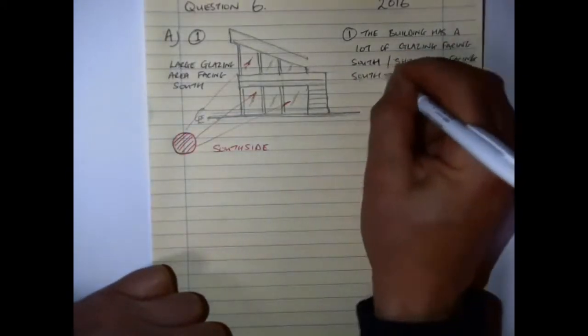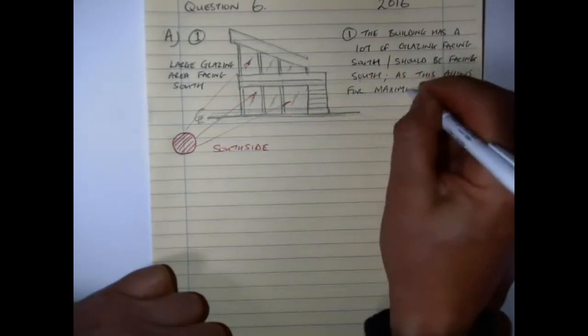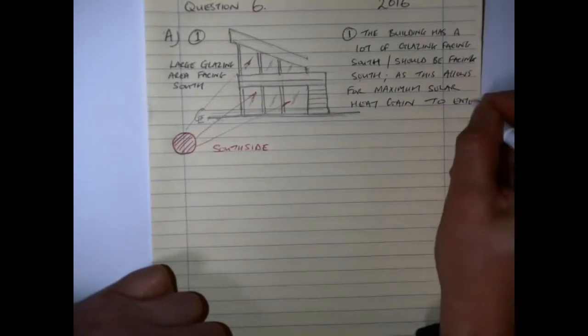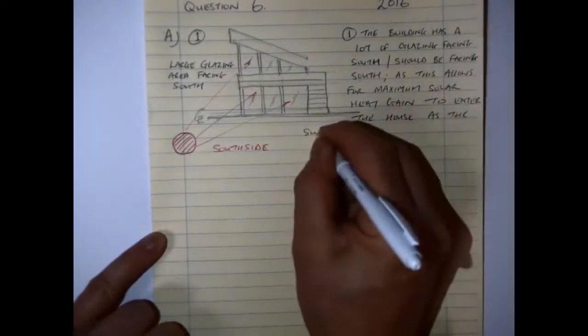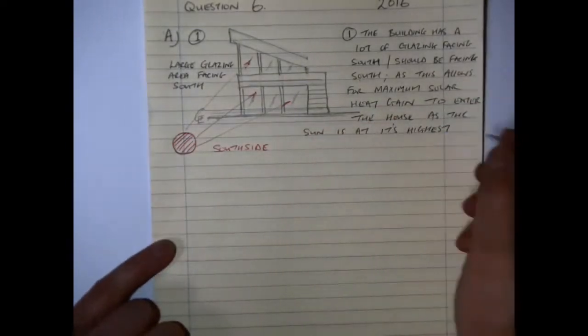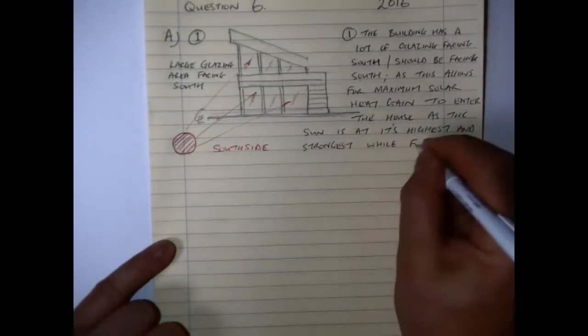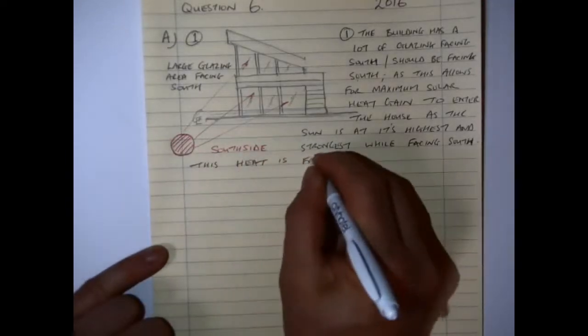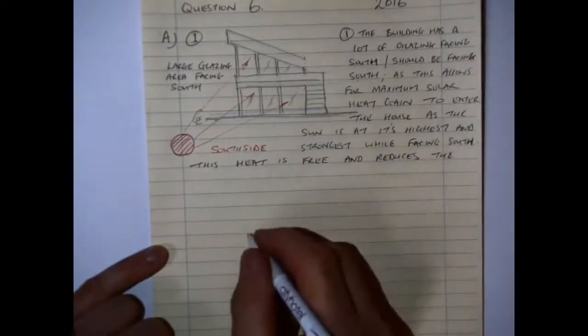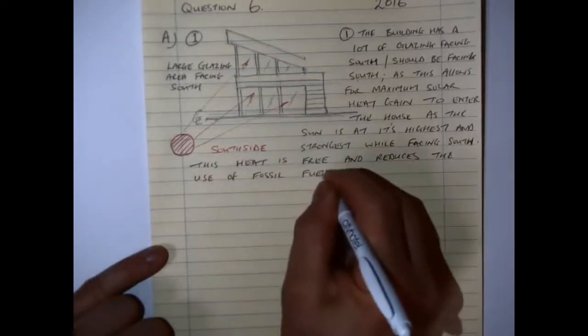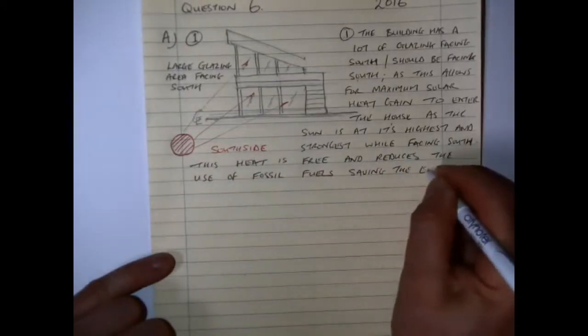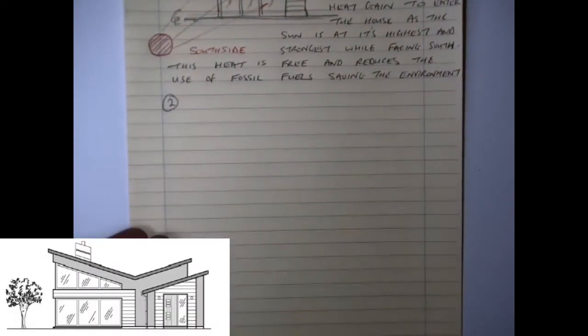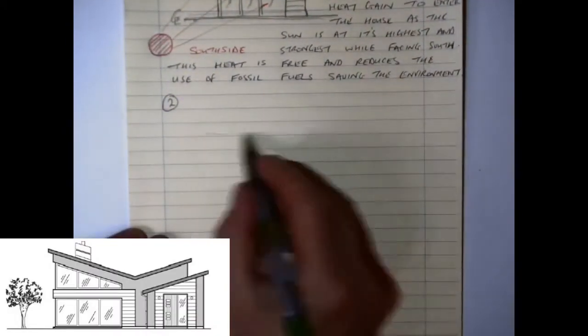The sun is always at its highest and strongest by facing south, and then the heat is free. The heat is free and it reduces the use of fossil fuels and saves on the environment, because remember the question again is focusing on low environmental impact. So this is one of the things. Normally the sketch or the marks between the sketch and the answer will be kind of 50-50, so whatever number of marks is going for the sketch will also be going for the note. So make sure that you include the note.